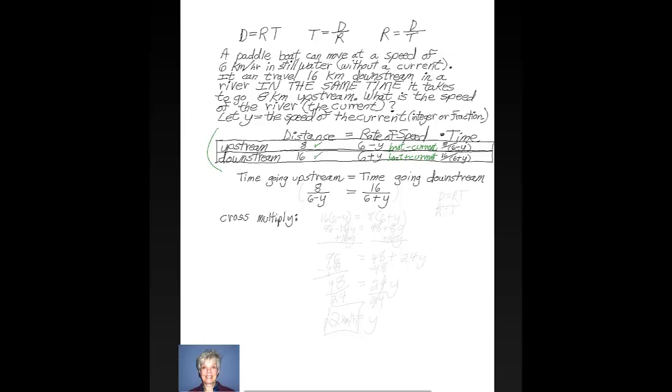We know that if distance equals rate times time, then when you divide both sides by R, time will equal distance divided by rate. So now we can say that time equals time. That is the time going upstream, which is 8 over 6 minus y, and the time going downstream, which is 16 over 6 plus y, are equal to each other.